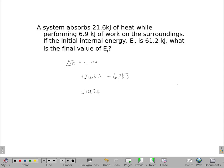Alright, but it doesn't ask for that. That 14.7 is just the E final minus E initial, because that's what a delta always is, final minus initial.